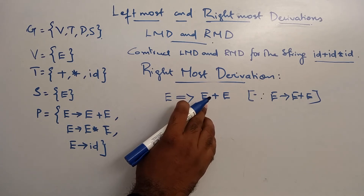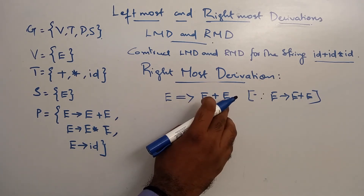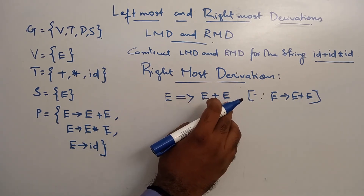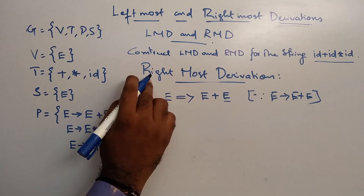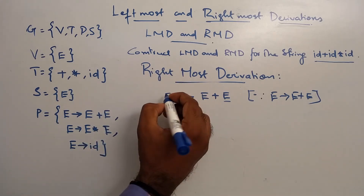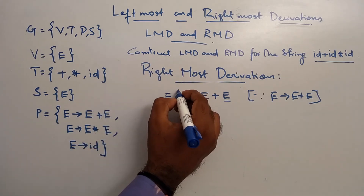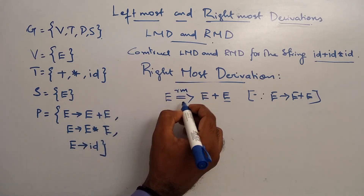Rightmost — this is leftmost, this is rightmost. So we can start with this because we are doing rightmost derivation. Rightmost derivation is RM.